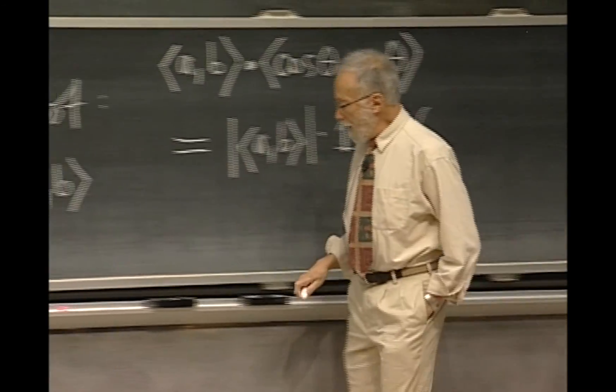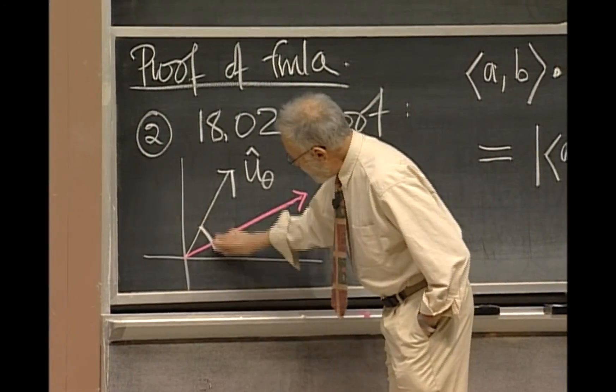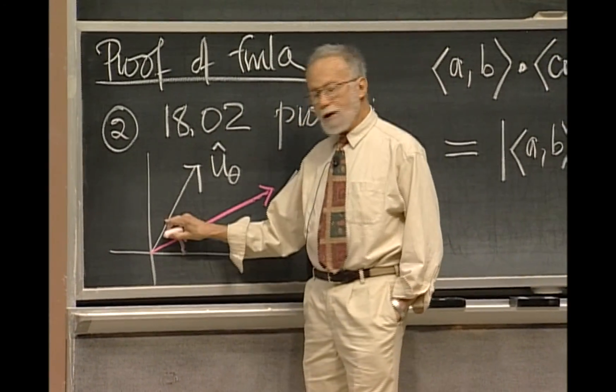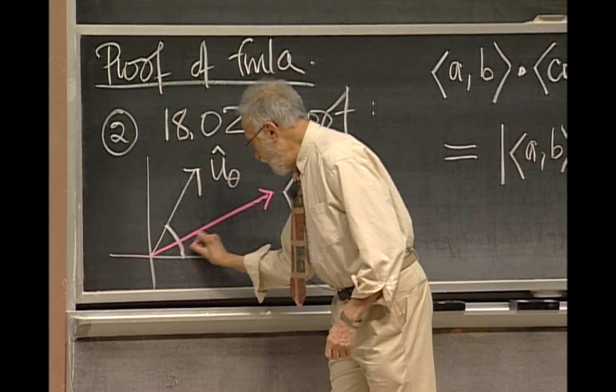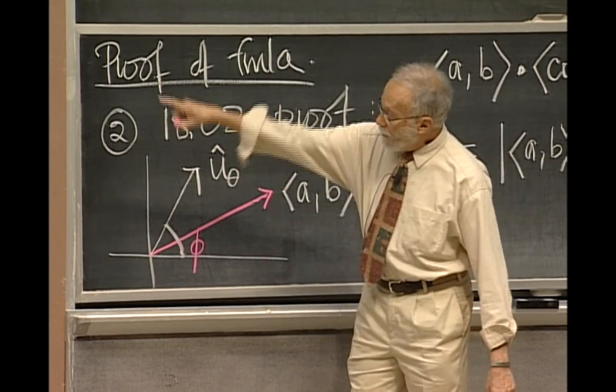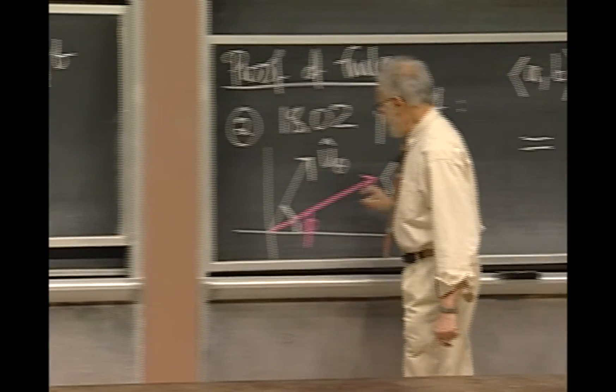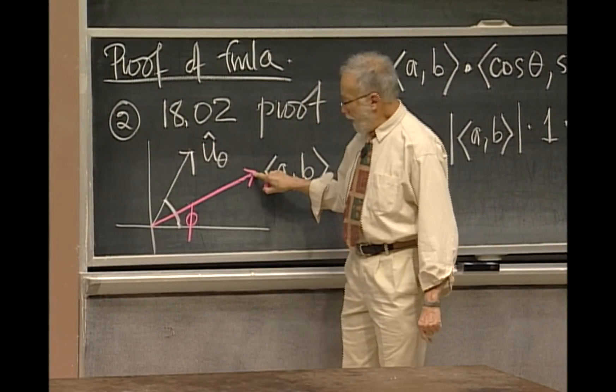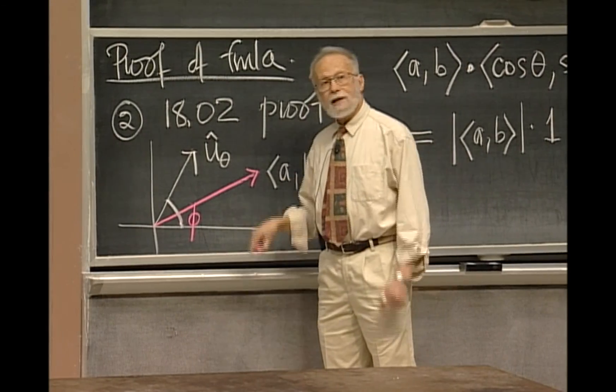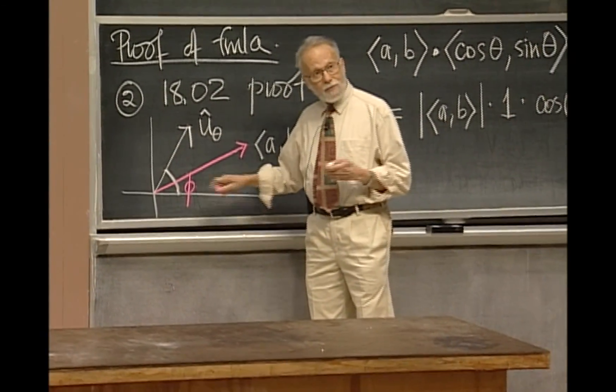Now, what's the included angle? Well, θ is this angle from the horizontal to that unit vector. This is, the angle φ is this angle from this picture here. And therefore, the included angle between u_θ and my pink vector is θ minus φ.